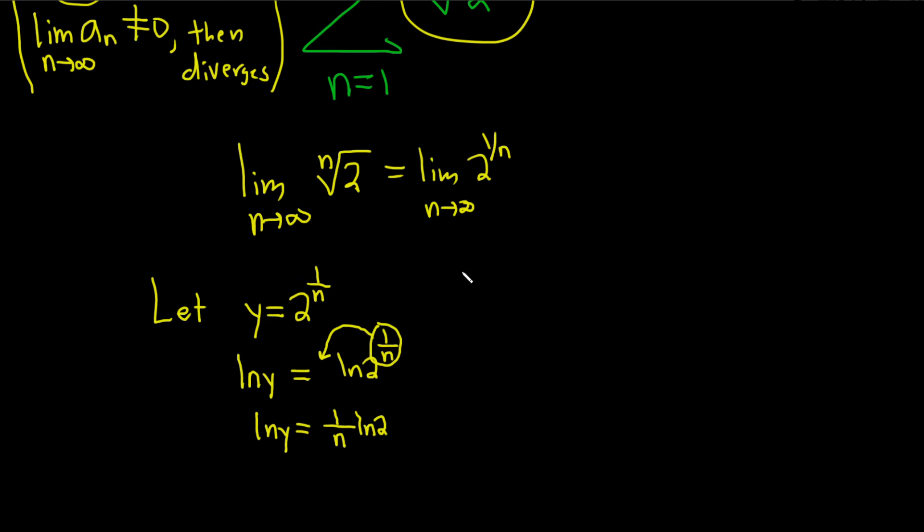So now we're going to take the limit of this, so let's do it. So we have the limit as n goes to infinity of the natural log of y. Well, that's the same thing as the limit as n approaches infinity of 1 over n times the natural log of 2. Well, the natural log of 2 is a constant, and then 1 over n approaches 0, so this equals 0.